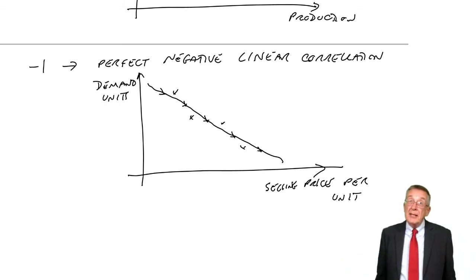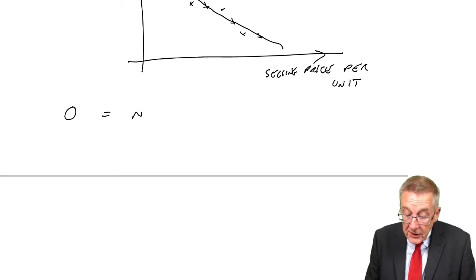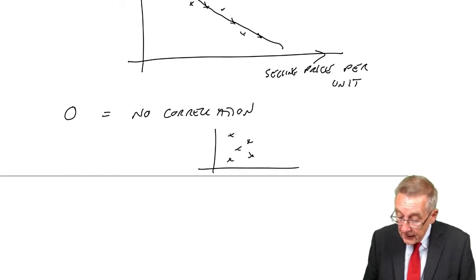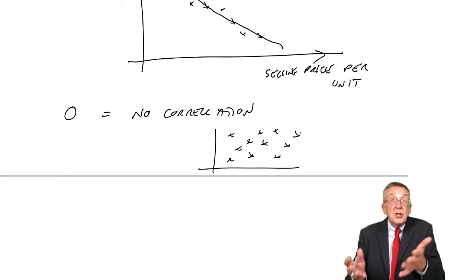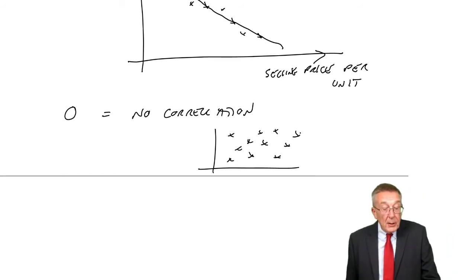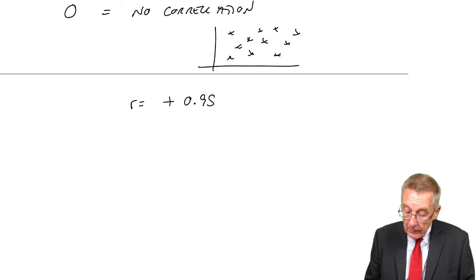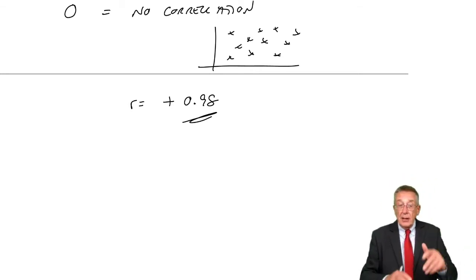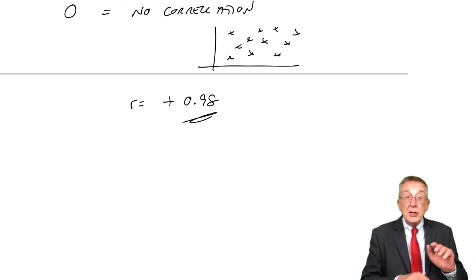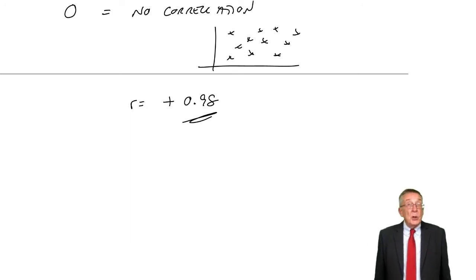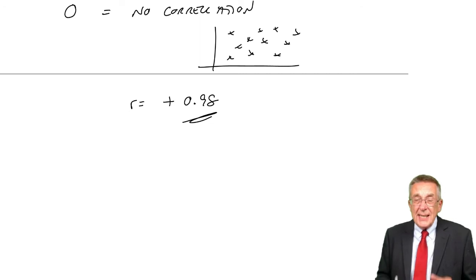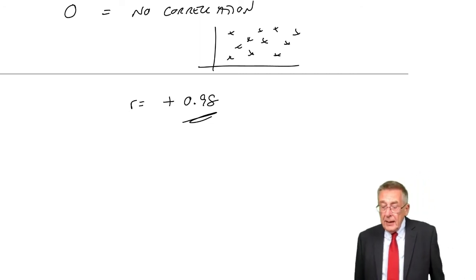The nearer it is to plus or minus one, the better. The nearer to zero, the worse. Zero would mean there was no correlation. What did we get? We got plus 0.98. It's positive, so they are going up together, which makes sense. Higher production, higher cost. It's not one, so they don't lie exactly on a line. But it's fairly close to one, so they are reasonably linear.